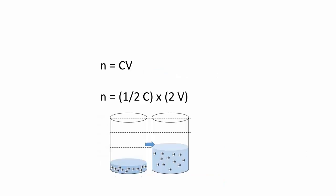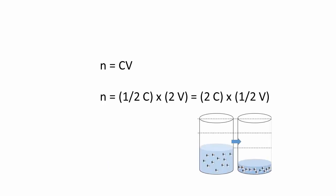If we double the volume, we halve the concentration and their product remains a constant. Conversely, if we evaporate the solvent and halve the volume, the concentration will double and again their product remains a constant.